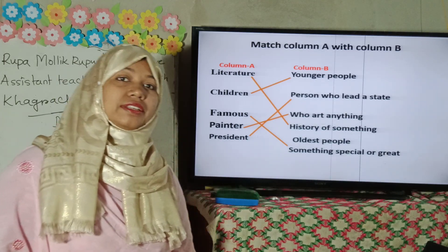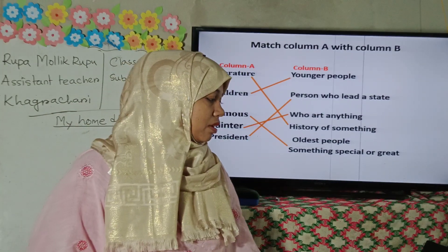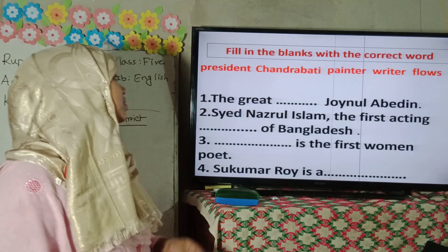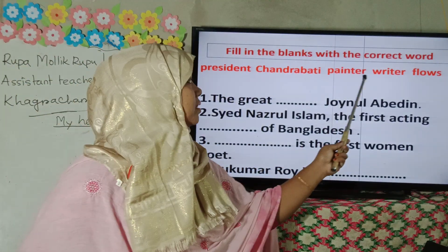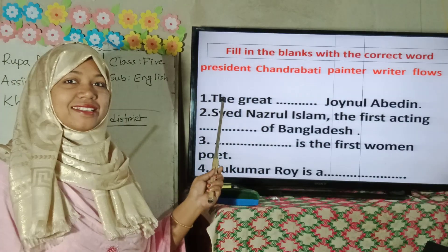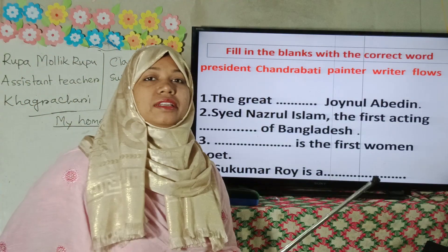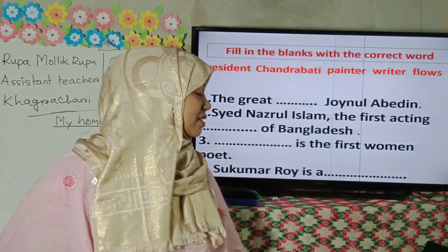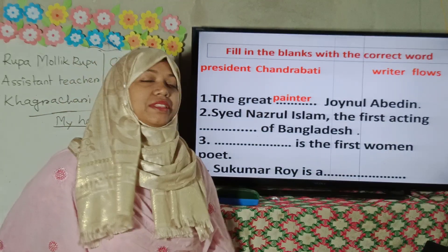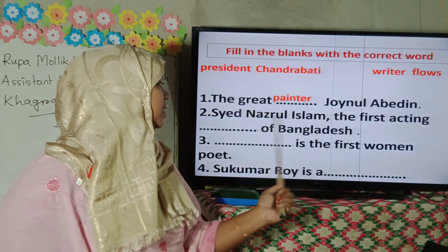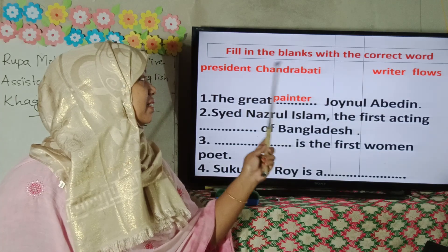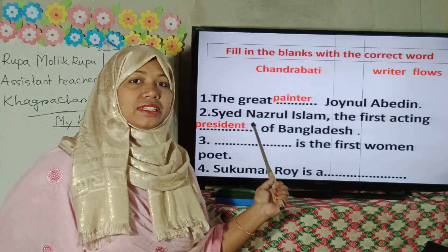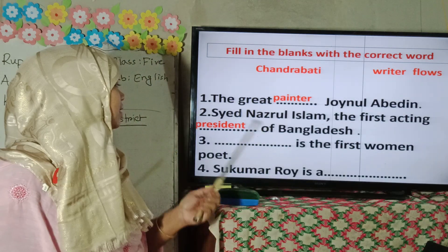Now I have a fill-in-the-gaps exercise for you. Try to fill the gaps with these options: president, Chandrabati, painter, writer, flows. First: 'The great blank Zainul Abedin' — the answer is painter. Next: 'Syed Nazrul Islam, the first acting blank of Bangladesh' — the answer is president. Then: 'blank is the first woman poet of Bangla literature' — the answer is Chandrabati.